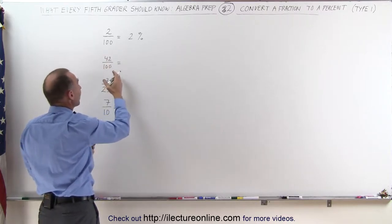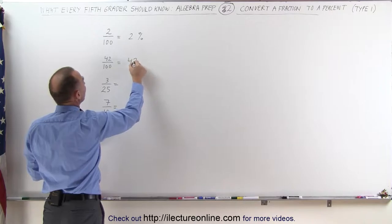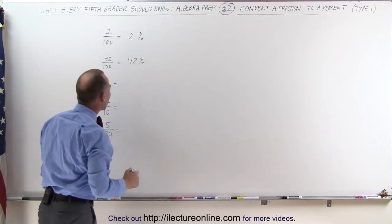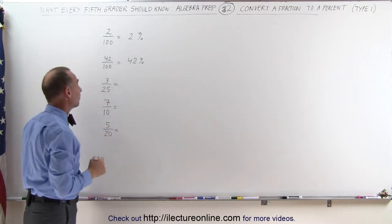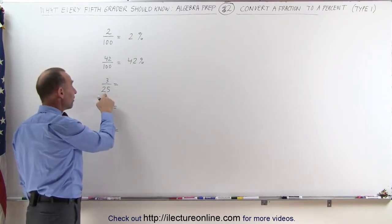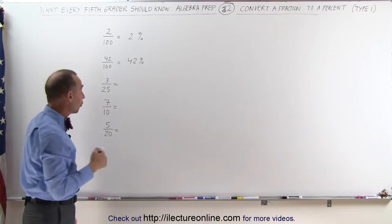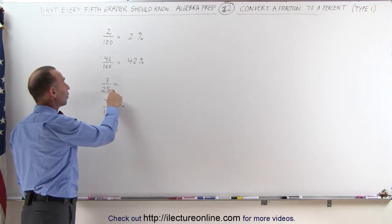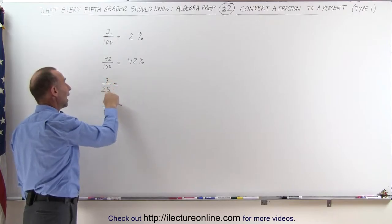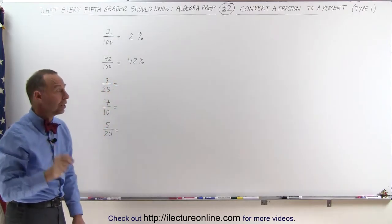But what if the denominator is not 100, like 3 divided by 25? Well, I can see that 25 fits easily into 100 four times, which means if I multiply the denominator times 4 and the numerator times 4, I now have a fraction that has 100 in the denominator.